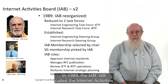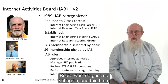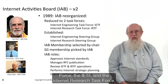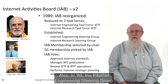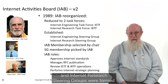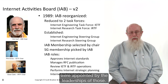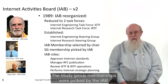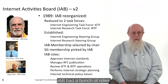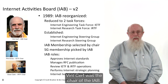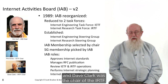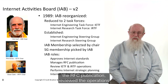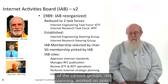In 1989, the IAB was reorganized yet again, this time reduced to two task forces: the Internet Engineering Task Force (IETF) and the Internet Research Task Force (IRTF), both of which are still going on. Also in 1989, the Internet Engineering Steering Group and Internet Research Steering Groups were formed. The IAB membership and steering group memberships were appointed by the leaderships of those bodies. The IAB had many roles: Vint Cerf was chair of the IAB, Phil Gross was chair of the IETF, and Dave Clark was chair of the IRTF. The IAB approved technical standards, managed RFC publication, reviewed operations of various groups, did planning, and worked on policy.